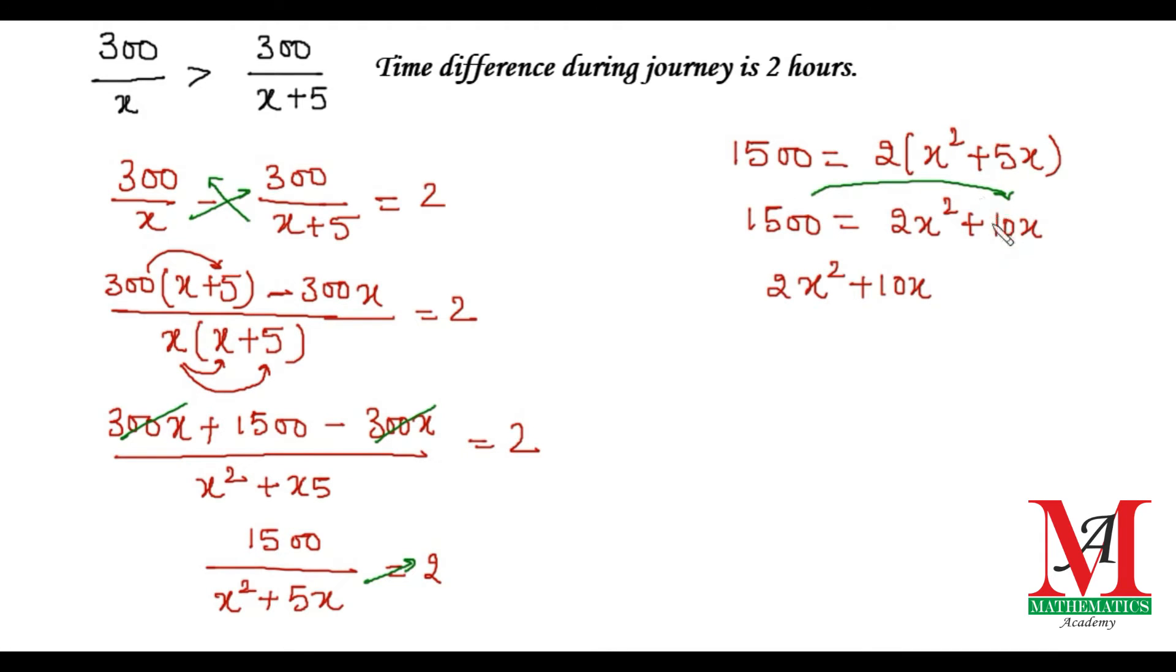We see that the whole equation can be divided by 2. On dividing the equation by 2, we get x² + 5x - 750 = 0. This is our equation which we need to solve.